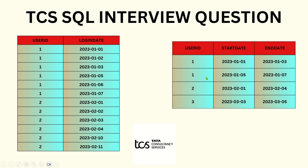For user_id 1, the start date is January 1st and end date is January 3rd, and again start date is January 5th and end date is January 7th. For user_id 2, start date is February 1st and end date is February 4th — you do not show the 10th and 11th again. User_id 3 also has some start date and end date. Try to analyze and understand the logic like a puzzle.